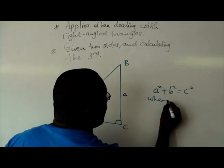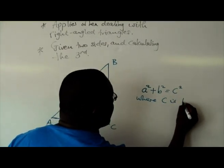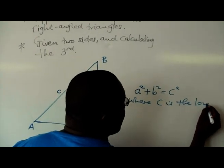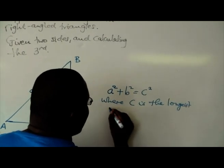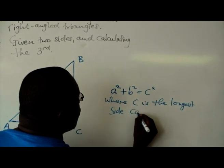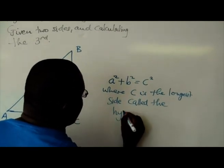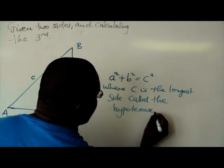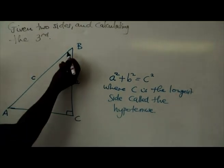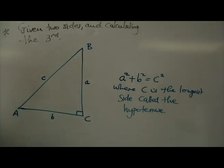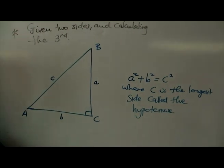Where c is the longest side called the hypotenuse. So the longest side of a triangle, AB, is called the hypotenuse.